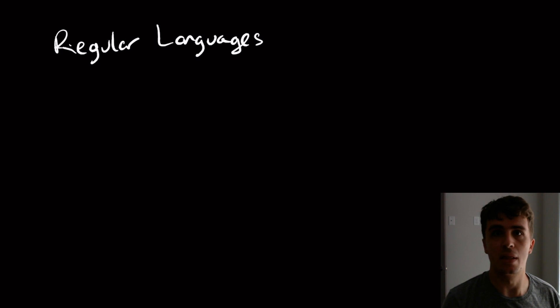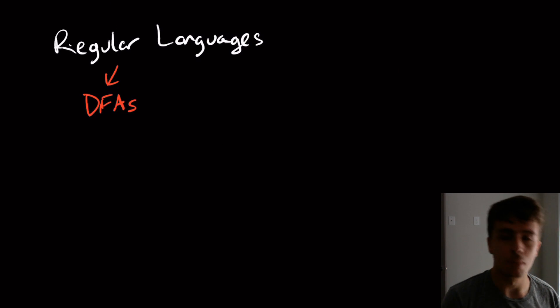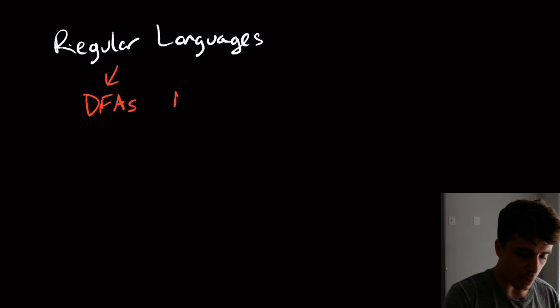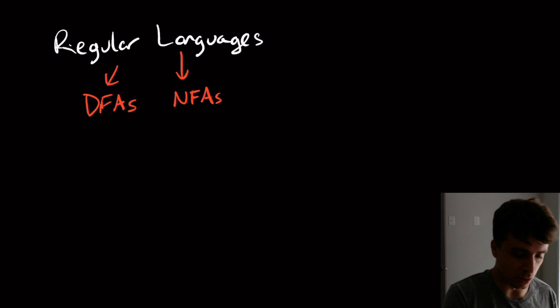So what are these languages? Well, they're just the sets of strings that are recognized with certain different models of computation. So the one we started off with are DFAs, which are the finite automata. And then we started talking about NFAs, which are just a non-deterministic version of a DFA, which can allow for multiple transitions and epsilon transitions and whatnot.